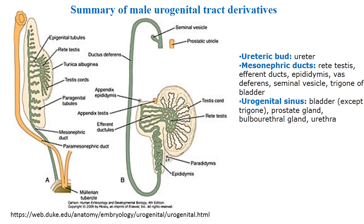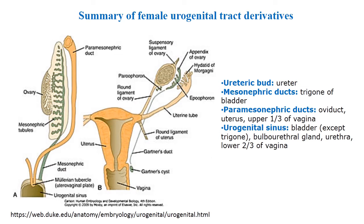On this slide you can see a summary of male urinary and genital tract derivatives — what appears from the ureteric bud, mesonephric ducts, and urogenital sinuses. On the next slide you can do the same for female urogenital tract derivatives, with the same origins plus the paramesonephric ducts.